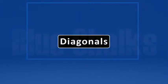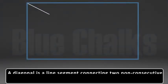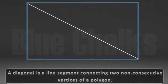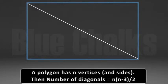Diagonals. A diagonal is a line segment connecting two non-consecutive vertices of a polygon. To count the number of diagonals: suppose a polygon has n vertices and sides, then the number of diagonals is equal to n(n-3)/2.